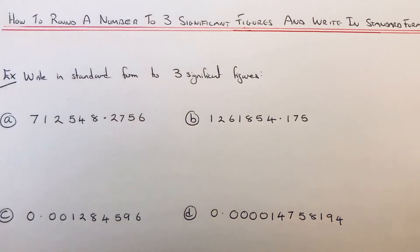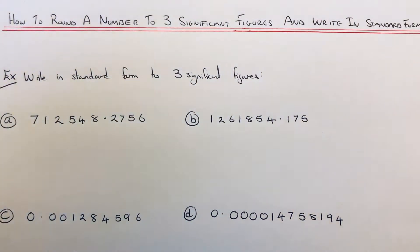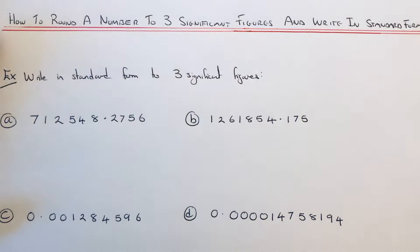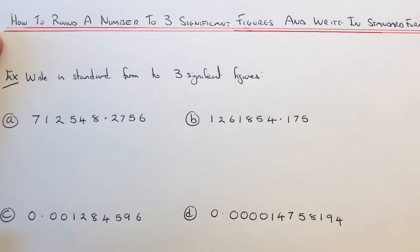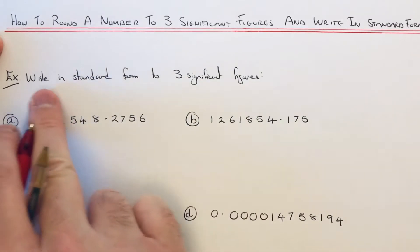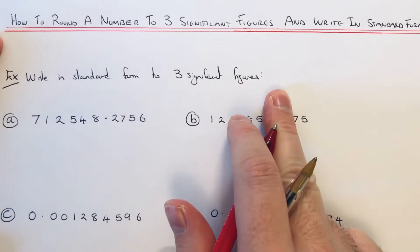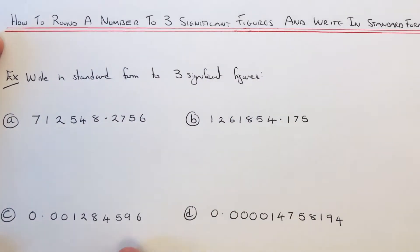Hi guys, welcome back, this is Maths 3000. I'm going to show you how to write a number in standard form if it asks you to round it off to three significant figures. Let's have a look at the first example: write in standard form to three significant figures.